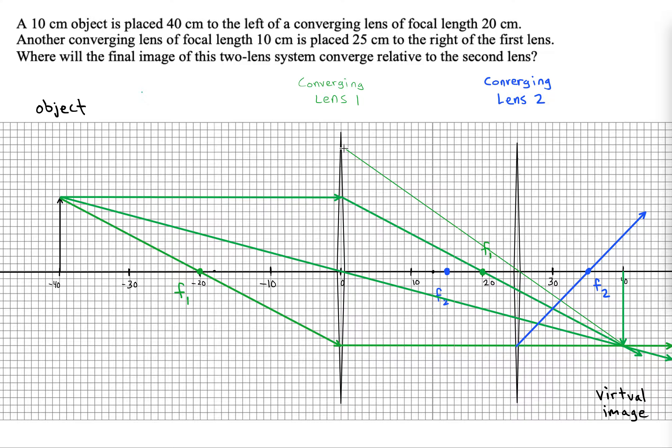Now why is that an important ray? Well, a ray that goes through the center of lens 2 would not bend. So that ray actually is one of the final rays that helps us form the image.